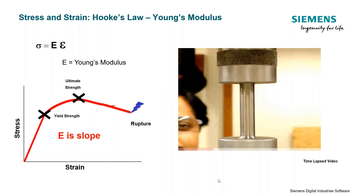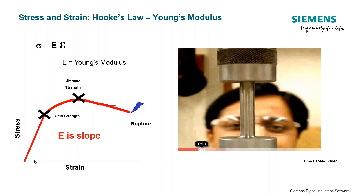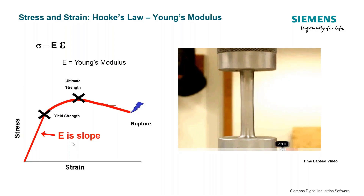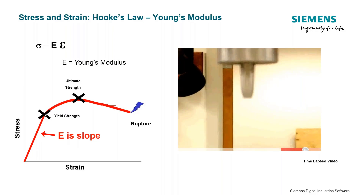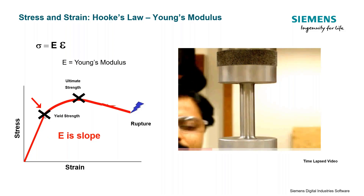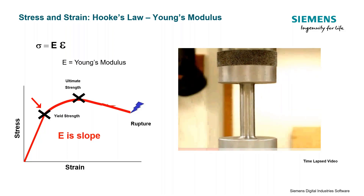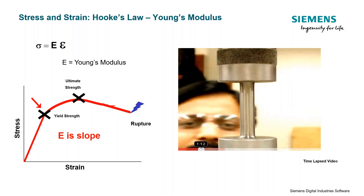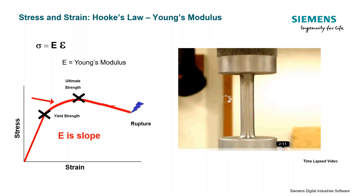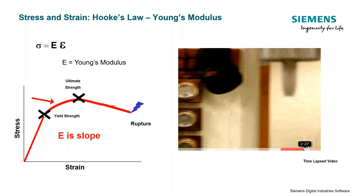There is a relationship between stress and strain. In the linear region of the material on a stress versus strain curve, we can relate these two quantities by Young's modulus, or the modulus of elasticity. Until we reach a certain point on the curve, we are in the linear region, meaning after we remove an applied load the material will return to its original shape with no permanent deformation. Once we move beyond that point, we enter the plastic region and there will be some permanent deformation.